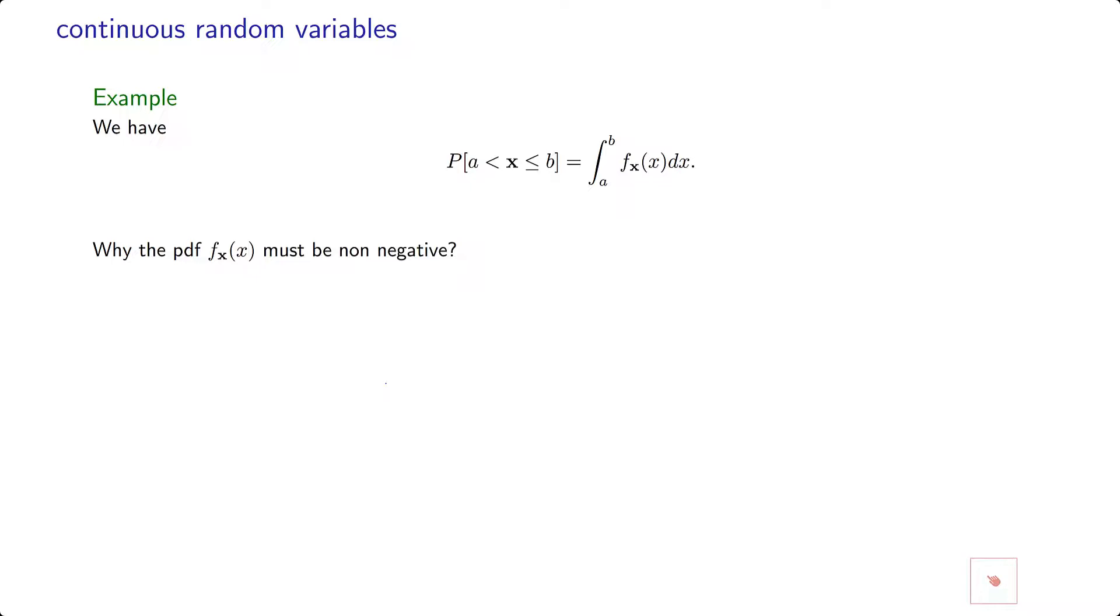So one property is that the PDF must be non-negative. If f_x of x is always bounded, we call this random variable a continuous type.